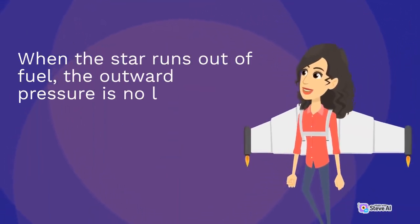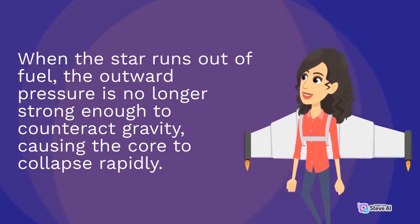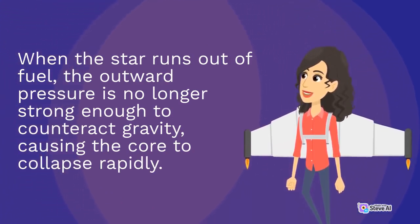When the star runs out of fuel, the outward pressure is no longer strong enough to counteract gravity, causing the core to collapse rapidly.